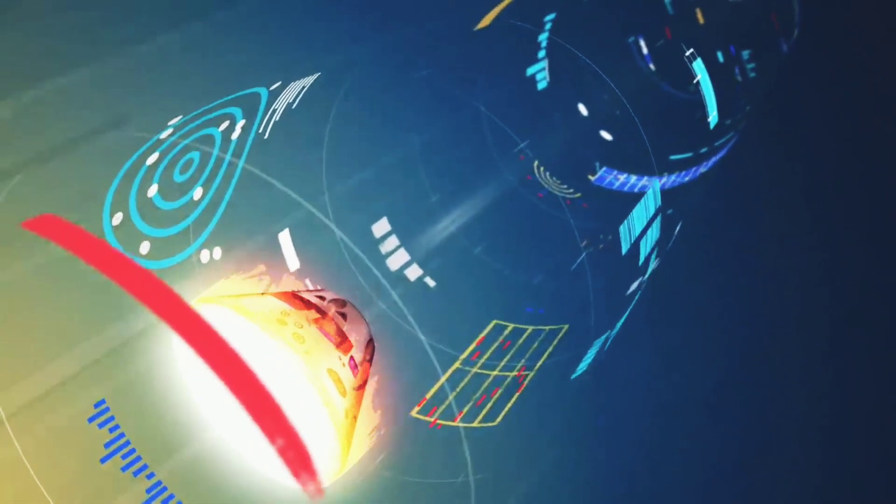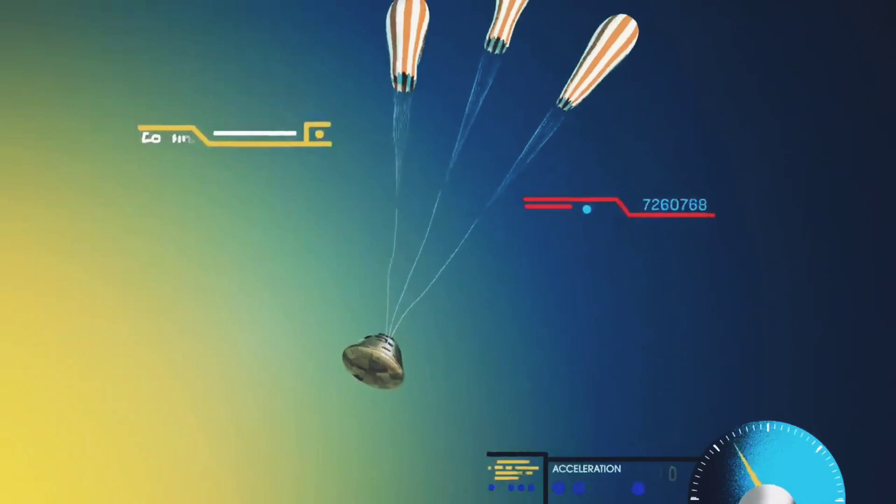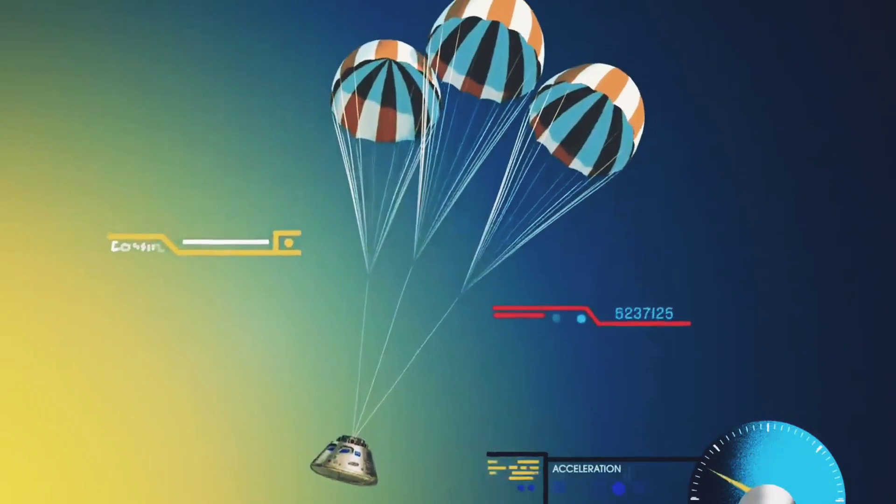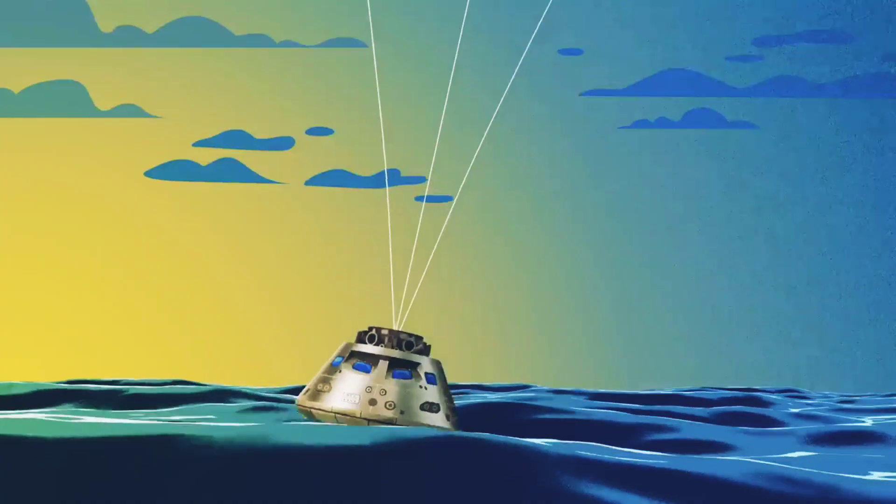With the Orion now at just 300 miles per hour, a series of parachutes uniquely tested and produced for this moment deploy, decelerating the craft to just 20 miles per hour for splashdown.